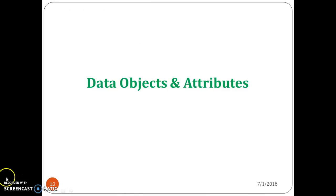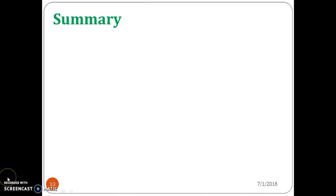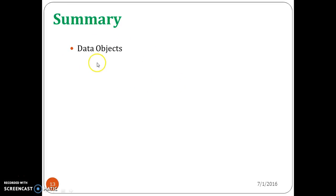We are going to see the summary of data objects and attributes. First, we started with what is a data object — we saw what is a dataset, what is a data object, the various examples for data objects, the various other names for data objects, and in a database what the row contributes to and what the column contributes to. Everything was discussed under data objects.